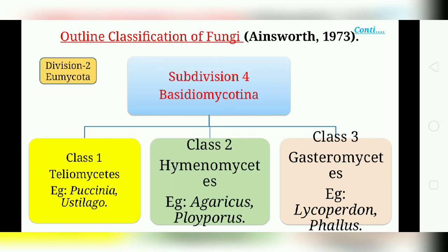The second class is Hymenomycetes. These are commonly called Agaricus or Polyporous fungi. The basidiocarpe is well developed and fleshy. Gills are formed in Agaricus, while pores are formed in Polyporous. Examples include Agaricus and Polyporous.